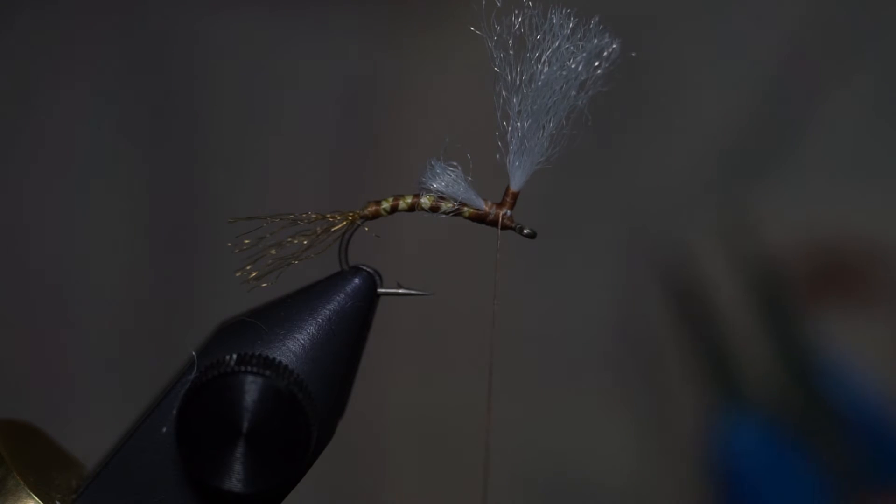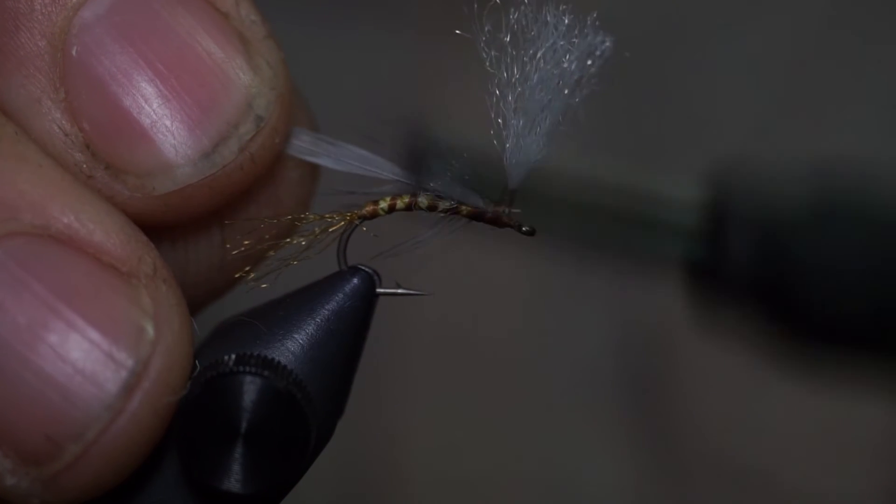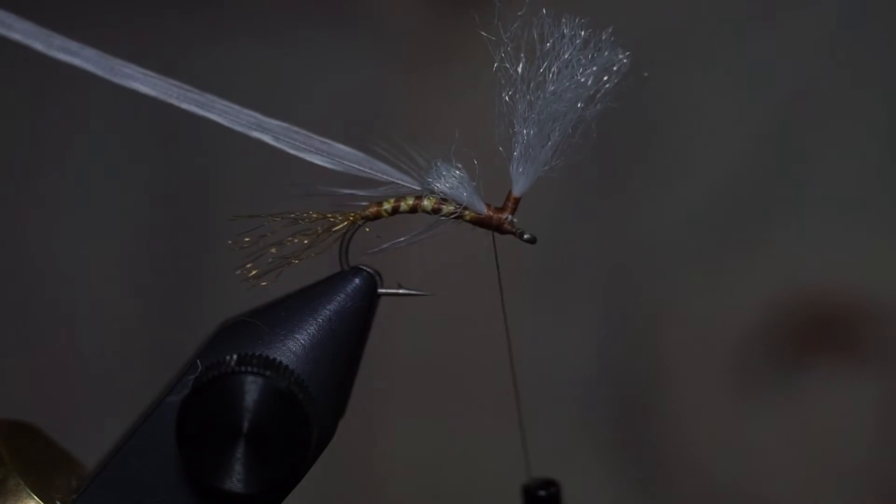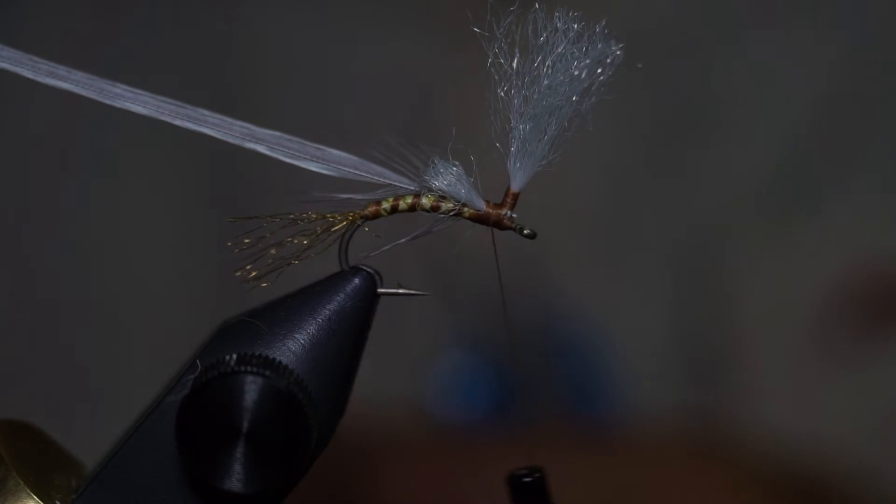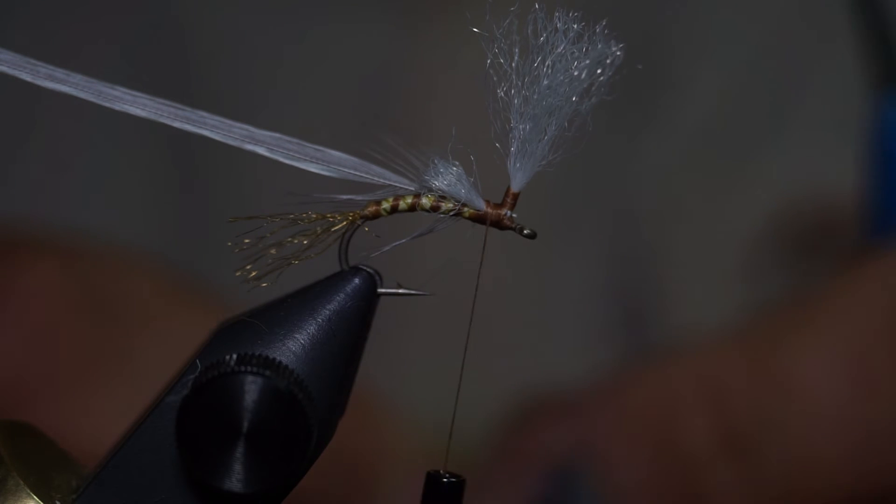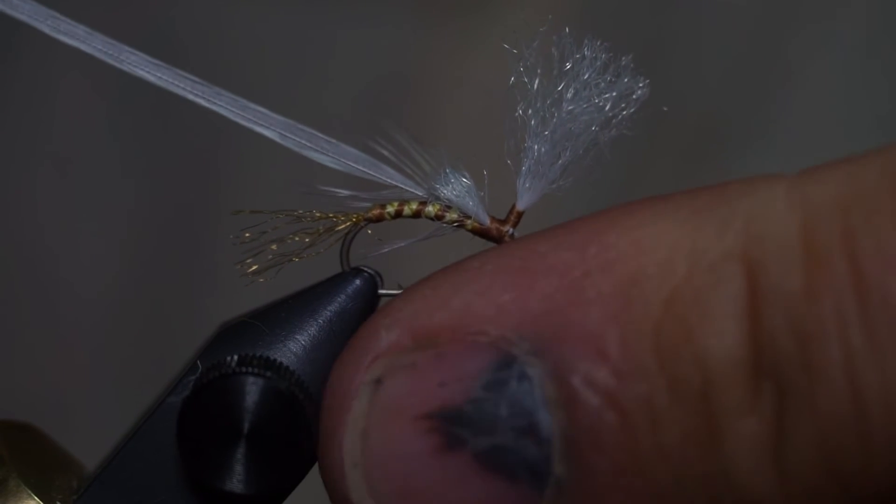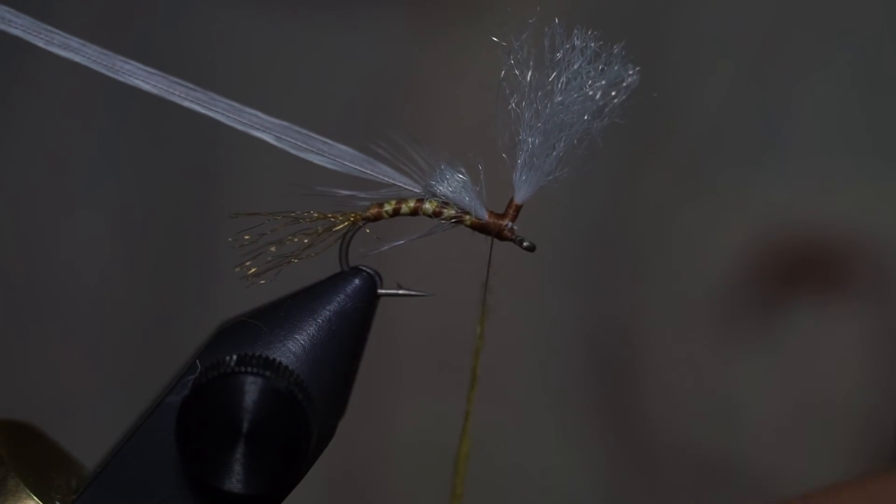And then I will tie in some gray, light gray dry fly hackle. And then I use PMD yellow, fine and dry dubbing. So I'll dub on some dubbing.